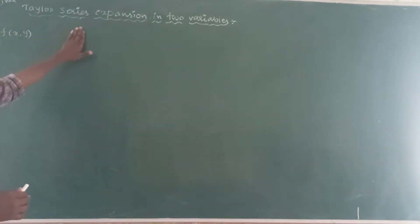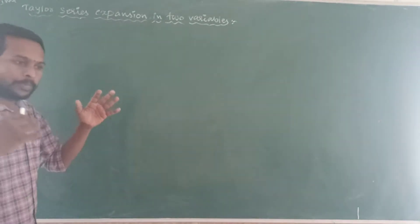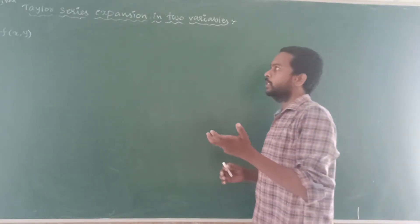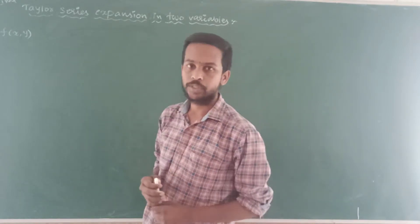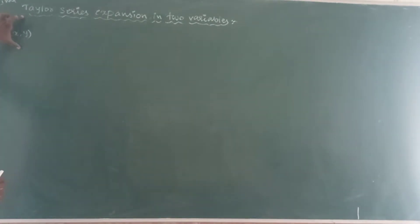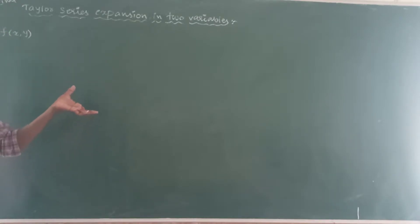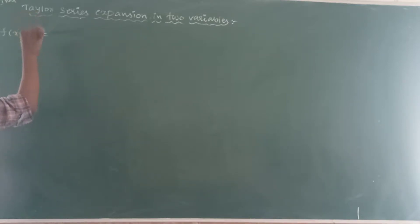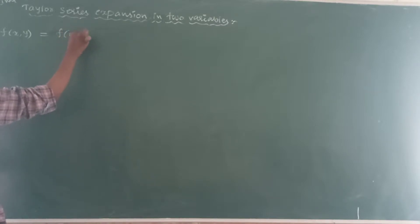Don't just look at the problem — see the method, see the process of how to solve the given question. Before solving a problem, you should know the formula. This is a shortcut formula to remember easily: f of x comma y is equal to f of a comma b.